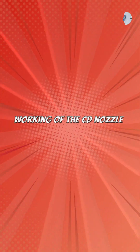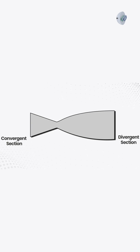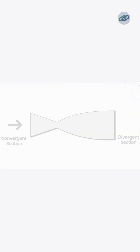The CD nozzle is a thrust generating device that works on Newton's third law. The exhaust gases that come out of the rocket combustion chamber are led into the convergent section of the CD nozzle. Here, the flow is subsonic and its velocity increases as it travels towards the throat due to decreasing the cross-sectional area.